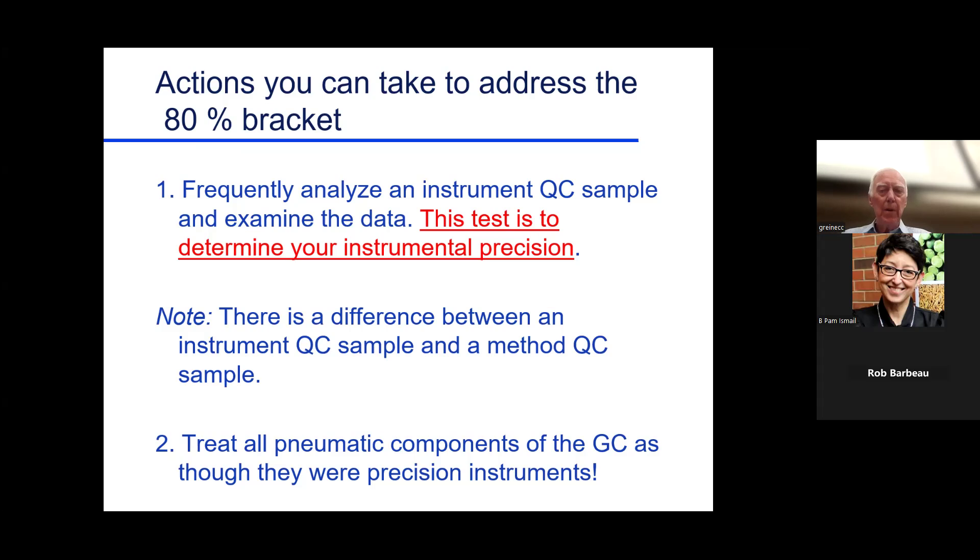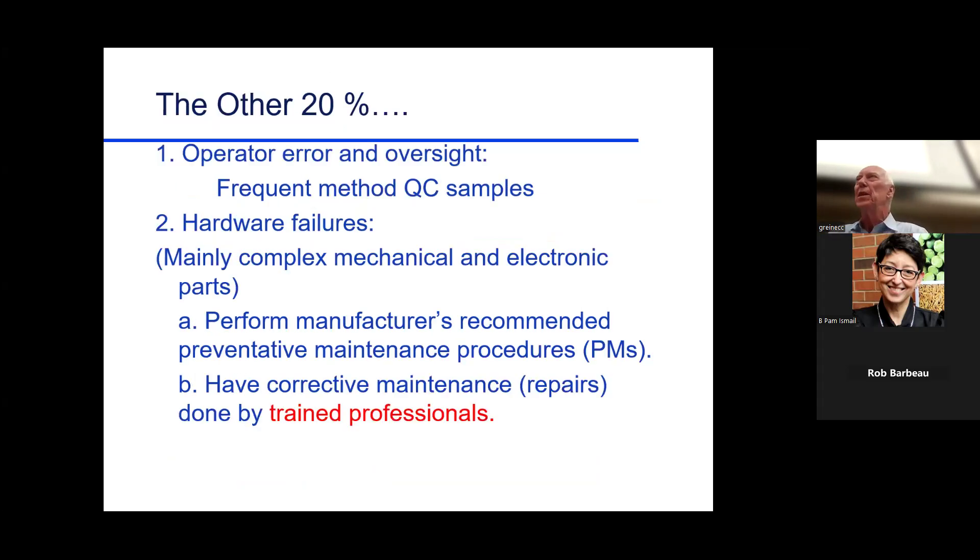The pneumatic components of the GC, flow controllers, gas sources, are precision instruments. You can buy some of the equipment from the local hardware store. You can go to your gas supplier and pick up regulators, piping, tubing. You don't do it. You pay the money that they want for these pieces of equipment because they are precision made. They may look like something at the welding shop, but they're not. They contaminate your carrier gas, your mobile phase, and you end up with peaks you didn't really expect. Very important.